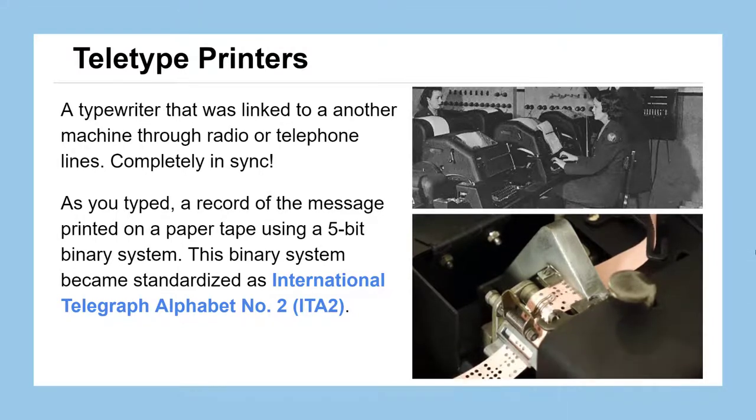Additionally, as you typed, a record of what you typed was not only printed to the paper on both the unit that it was typed on and received on, but is also recorded on this paper tape that had holes punched into it, and the pattern of holes corresponded to the characters or operations that were sent over the radio or telephone line. This five-bit system, you can see it's got a row of very thin circles down the middle that just keeps it oriented correctly, but then up to five larger circles for each character were used. And over time, different competing standards emerged, but ultimately one won out in the end, and it was known as the International Telegraph Alphabet Number 2, which we'll abbreviate as ITA2.